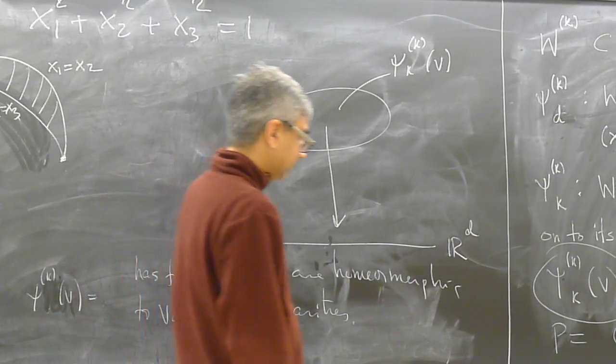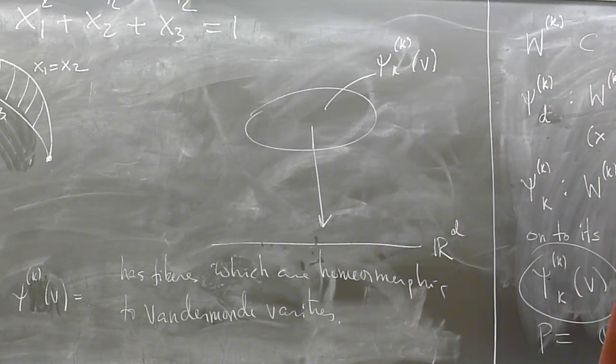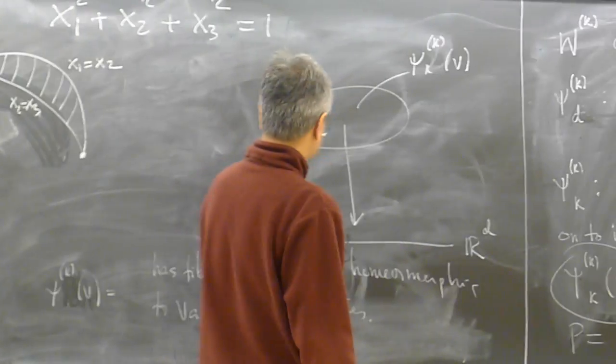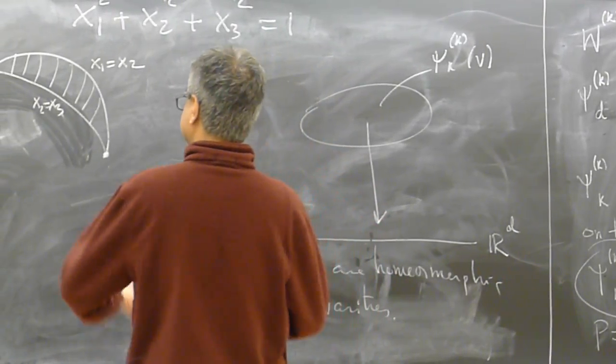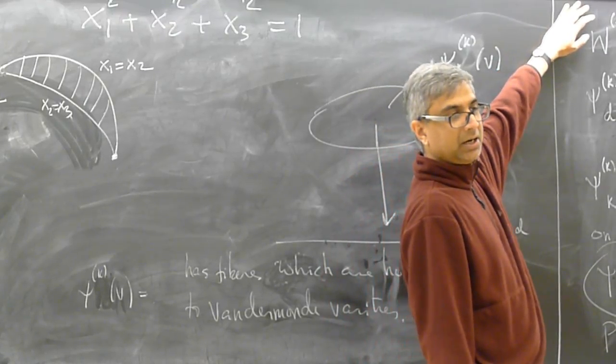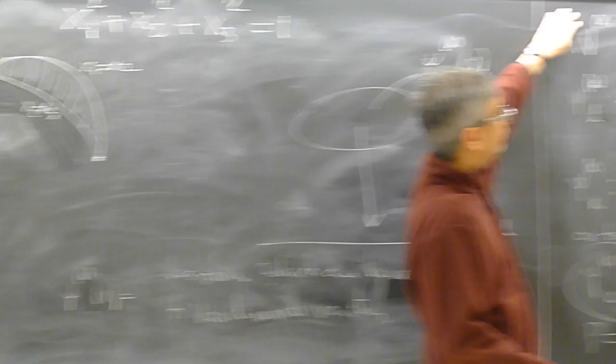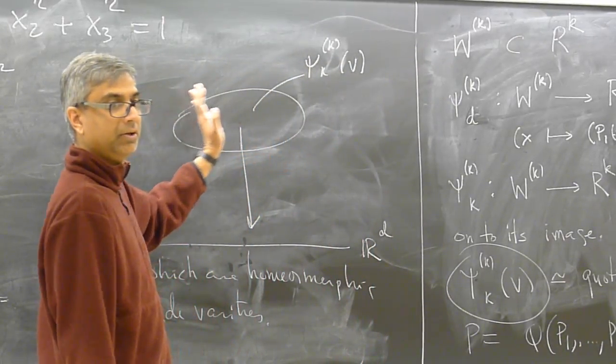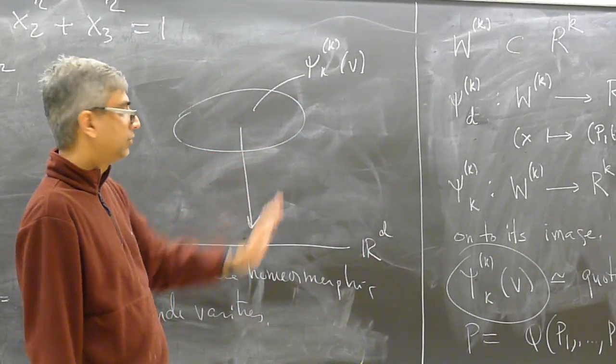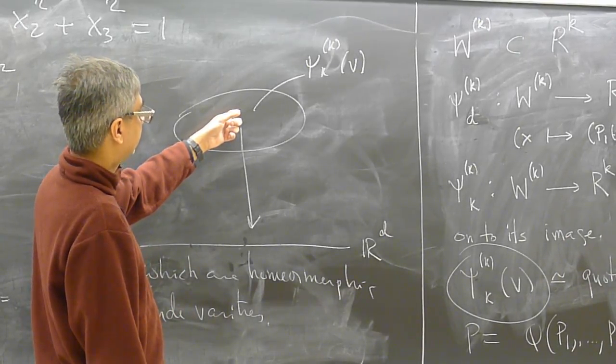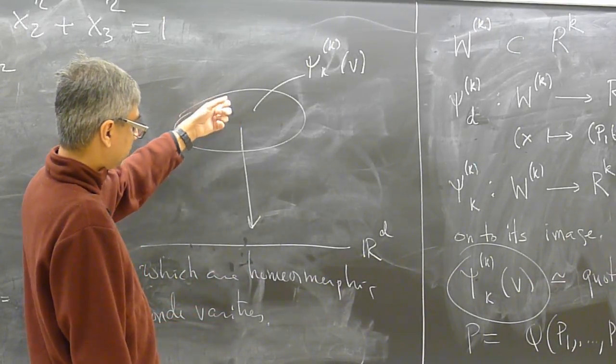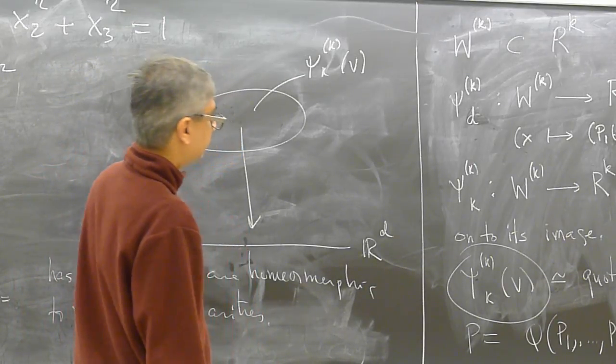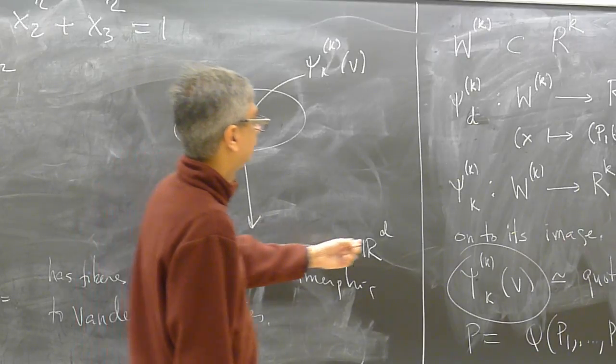So that means from the theorem that van der Mond varieties intersected with the wall chamber are always contractible even if they are singular. So that means that the fibers of this map are all contractible, and so CKV is by a Vietoris-Begle argument homotopically equivalent to the projection onto the first d coordinates.